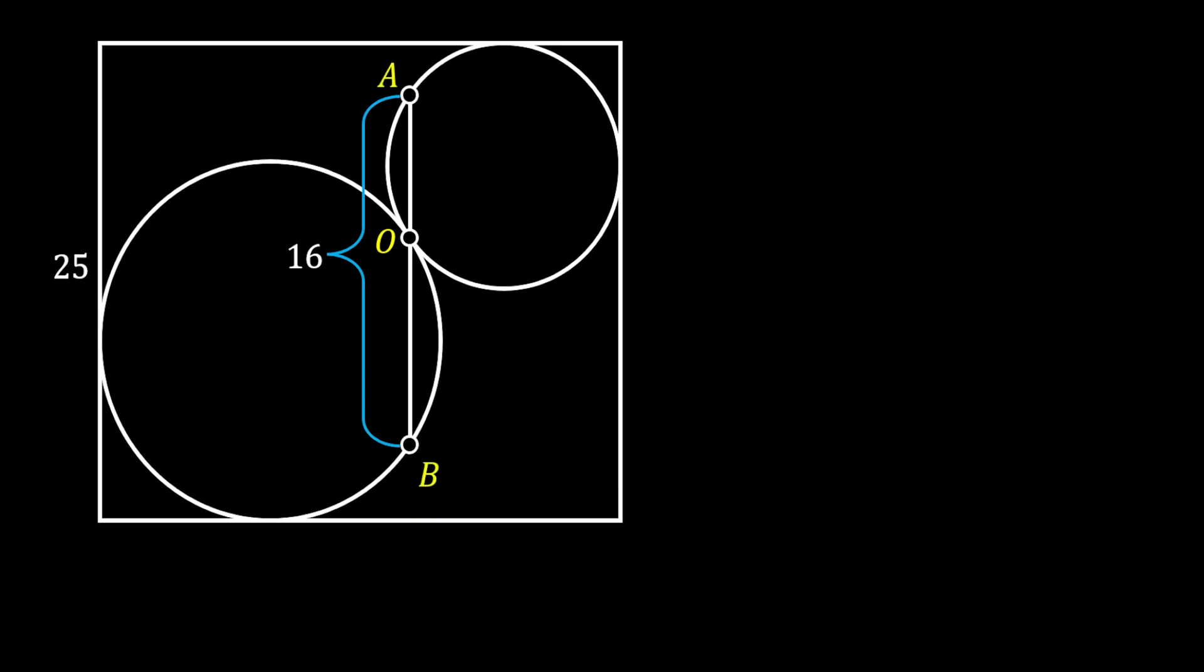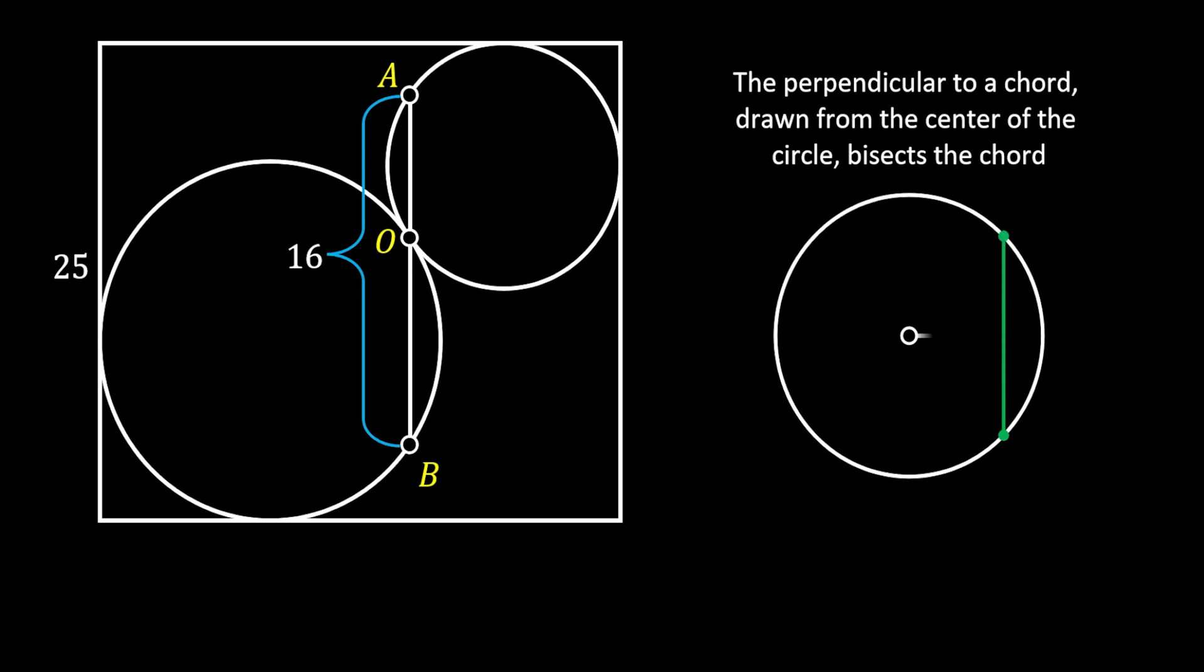Now, we will use a really interesting property of a circle that states that the perpendicular to a chord drawn from the center of the circle bisects the chord. So, we can use this in our case.